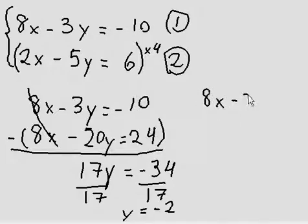So equation number 1, 8x minus 3 times negative 2, since that's y, equals negative 10.